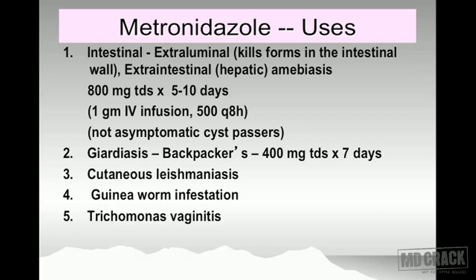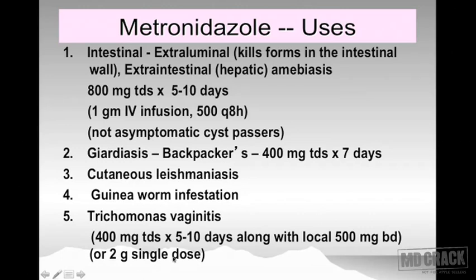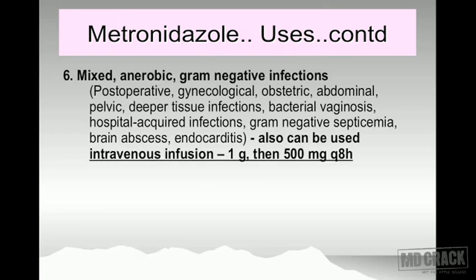Next indications include cutaneous leishmaniasis and guinea worm infestation — draconculosis. For Trichomonas vaginalis, give 400 milligrams three times a day for five to ten days, along with additional local treatment. Alternatively, 500 milligrams twice a day or a single dose of two grams can be used. The next indication covers all mixed anaerobic gram-negative infections.